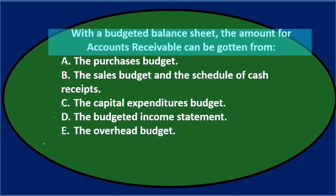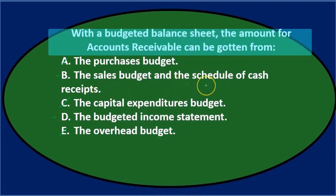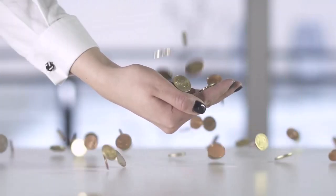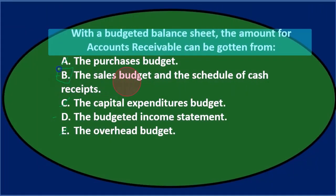Between B and D: the sales budget and schedule of cash receipts versus the budgeted income statement. Option B sounds better — when we think about accounts receivable, we're looking at sales and then cash receipts. B has the sales budget so we know what we sold, and it has the schedule of cash receipts so we know the amount collected back from customers who paid on account, paying off their receivables. So B seems like the final answer.